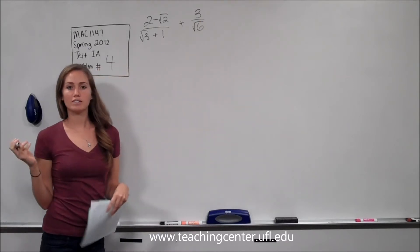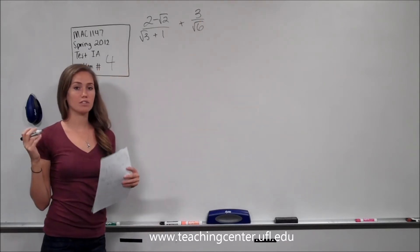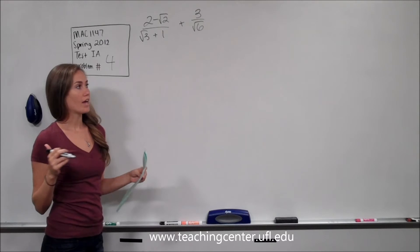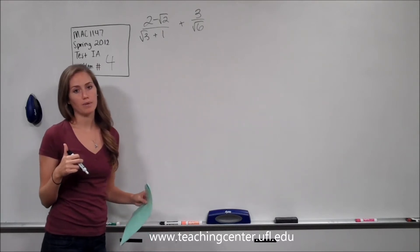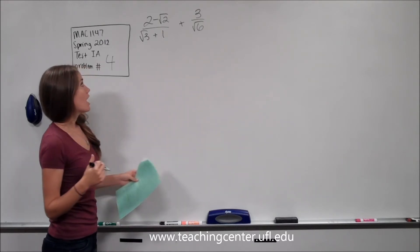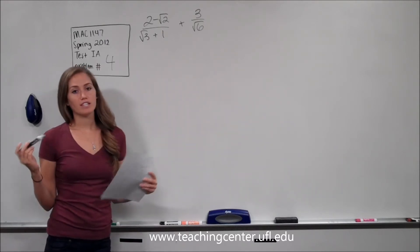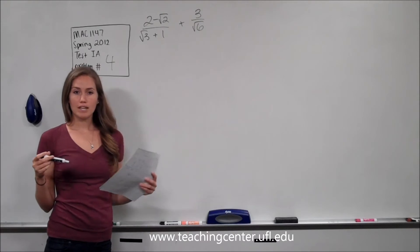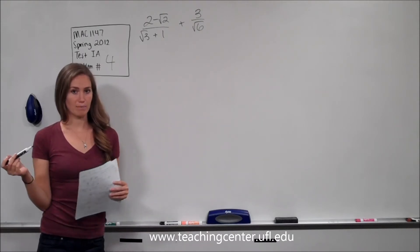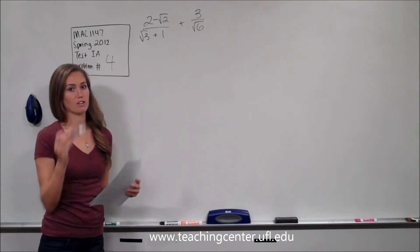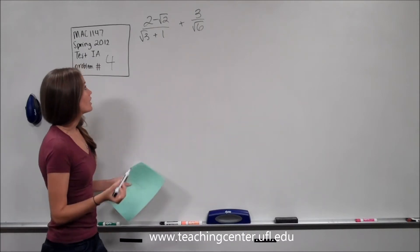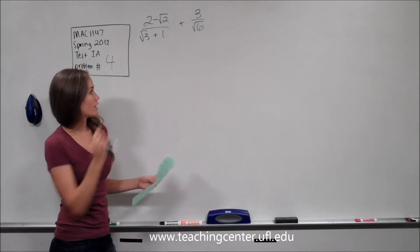When we rationalize something, we want to get the square roots out of the denominator. To do that, we multiply the denominator by its conjugate. And if we're multiplying the denominator by something, we have to also multiply the numerator by something as well, so as not to change the whole problem. So that's what we're going to do right now.